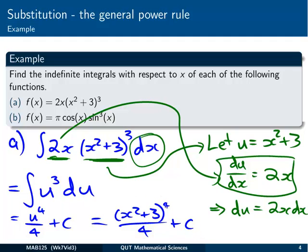And we'd use the chain rule here to get 1 on 4 times 4 which goes away, x squared plus 3 to the 3 and the derivative of x squared which is 2x. So we'd end up with exactly the integrand that we had in the start.